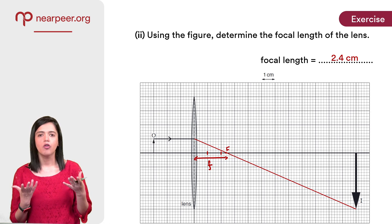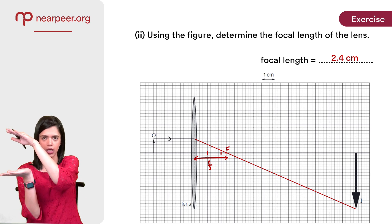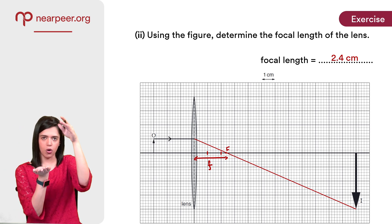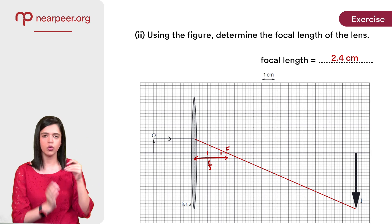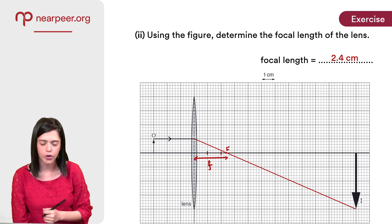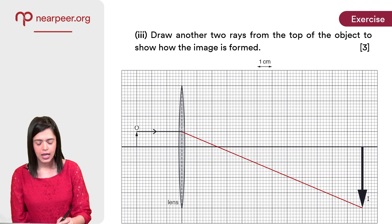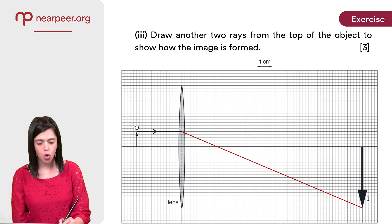You need to remember the rules for drawing ray diagrams for thin converging lenses: whenever a ray is parallel to the principal axis, after refraction it always passes through the focal point of the lens.